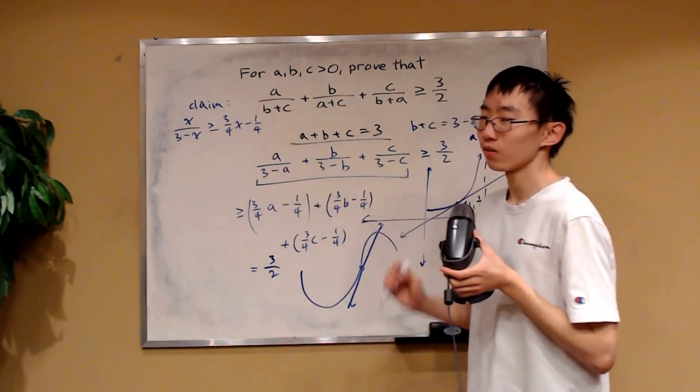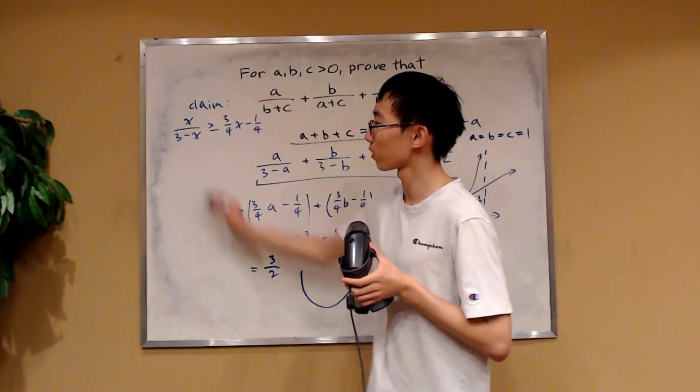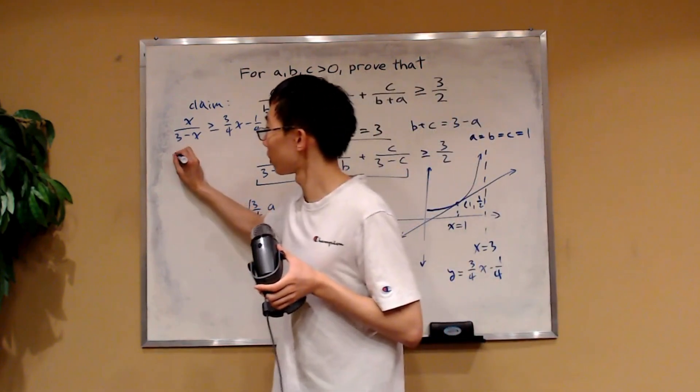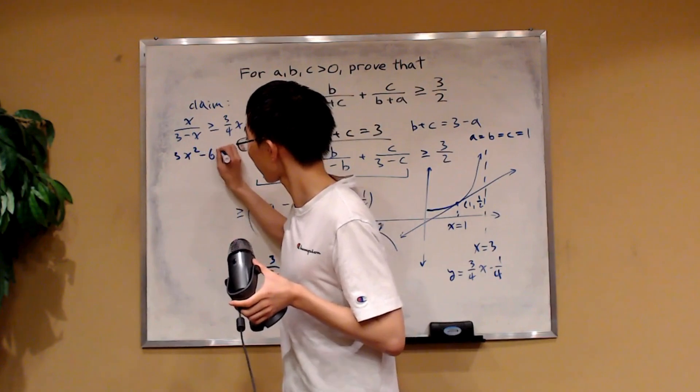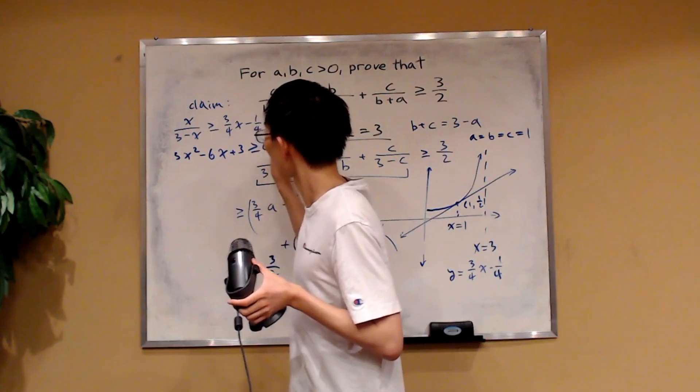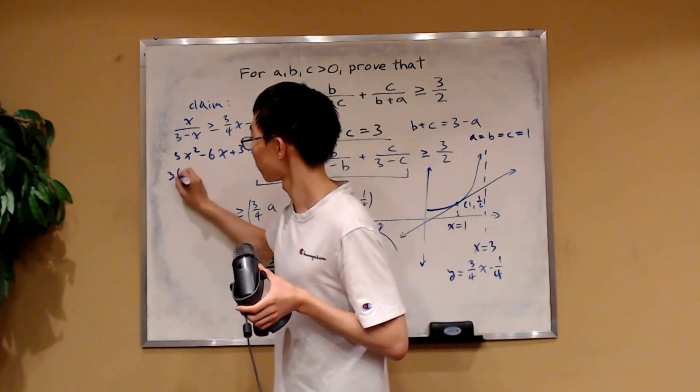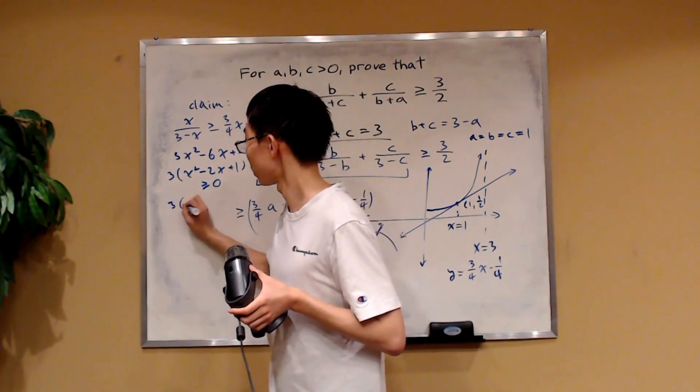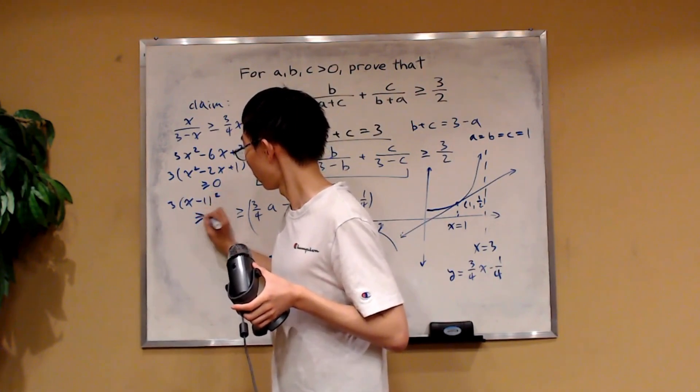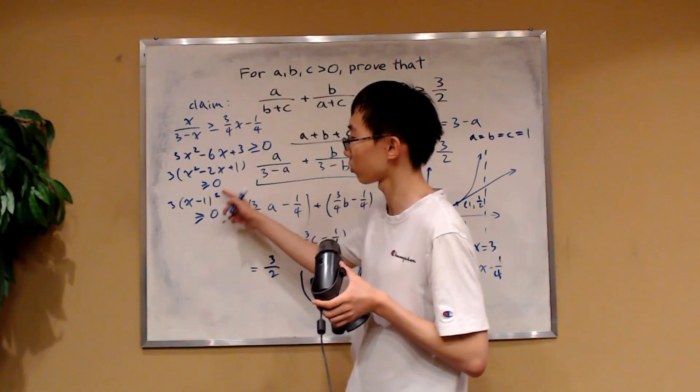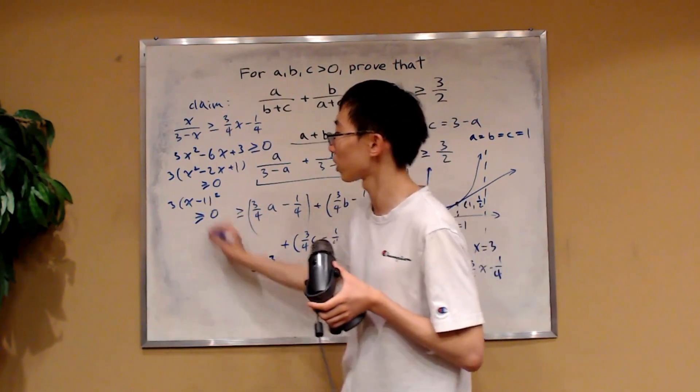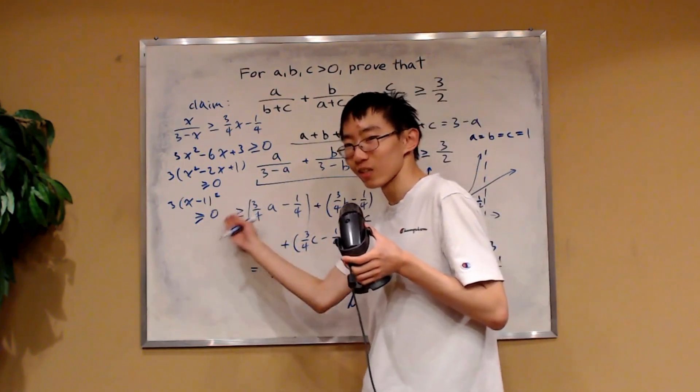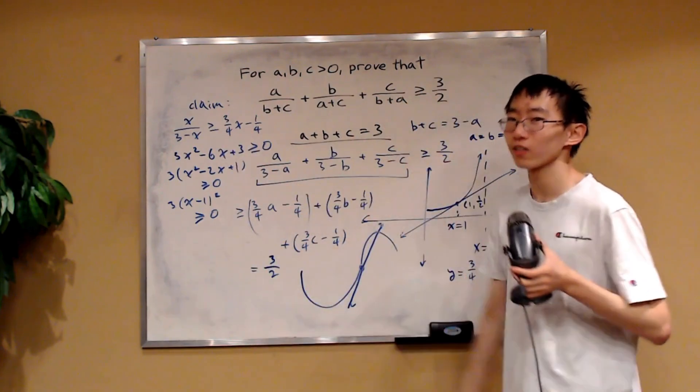So how can we prove this? Well, it's actually not very hard. You can multiply both sides by 3 minus x because 3 minus x is positive. And then simplify, you eventually get 3x squared, and then minus 6x plus 3 is greater or equal to 0. And you can factor out 3, that becomes 3 times x squared minus 2x plus 1. And as you can see, this just factors into x minus 1 squared. So this is equivalent to 3 times x minus 1 squared is greater or equal to 0. Clearly true because x minus 1 squared, it's going to be positive or not negative. So this inequality is true. So this is true. We have finally completed our proof.